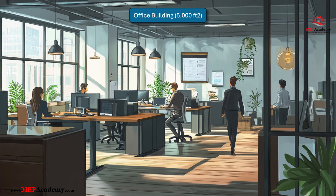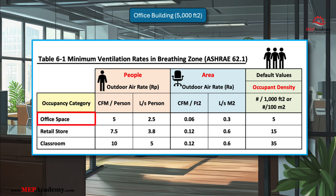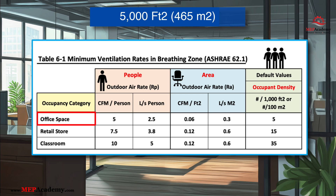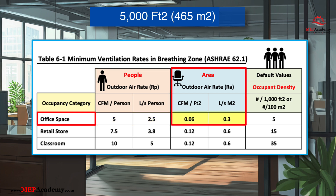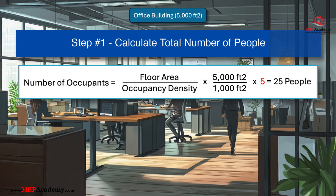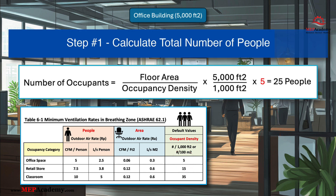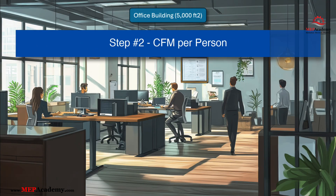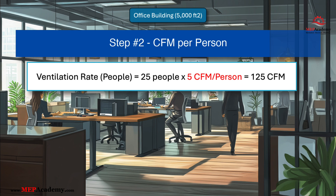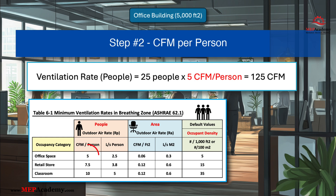Example 1: Office Space. Given data — Occupancy Type: Office Space; Floor Area: 5,000 sq ft; Occupancy Density: 5 people per 1,000 sq ft (per ASHRAE 62.1 Table); Outdoor air rate per person: 5 CFM per person; Outdoor air rate per area: 0.06 CFM per sq ft. Step 1: Calculate the total number of occupants. Number of occupants = (5,000 sq ft / 1,000 sq ft) × 5 people per 1,000 sq ft = 25 people. Step 2: Calculate the ventilation rate required for occupants. Ventilation rate (people) = number of occupants × outdoor air rate per person = 25 people × 5 CFM per person = 125 CFM.